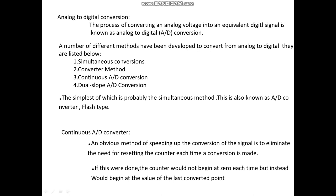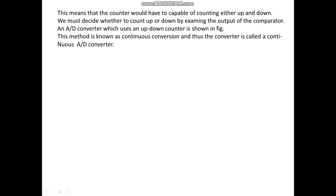In the continuous method, the counter does not begin at 0 every time — instead it begins at the value of the last conversion. But in the converter method, its value starts from 0 every time. This means the counter must be capable of counting up or down, and we must decide whether to count up or down by examining the output of the comparator. That is why it is known as continuous conversion.